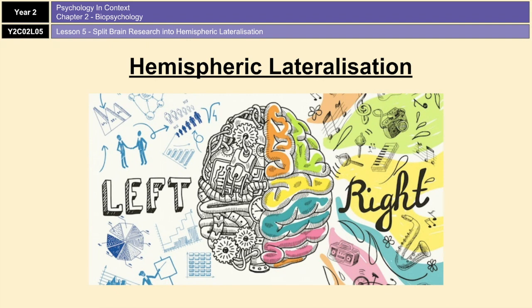For example, in most people, language is dominated by the left hemisphere. If you remember from the localization lesson, language is actually dominated by specific areas in the brain, such as Broca's area and Wernicke's area, both of which are in the left hemisphere. So language is both lateralized and localized, which is just something to bear in mind.